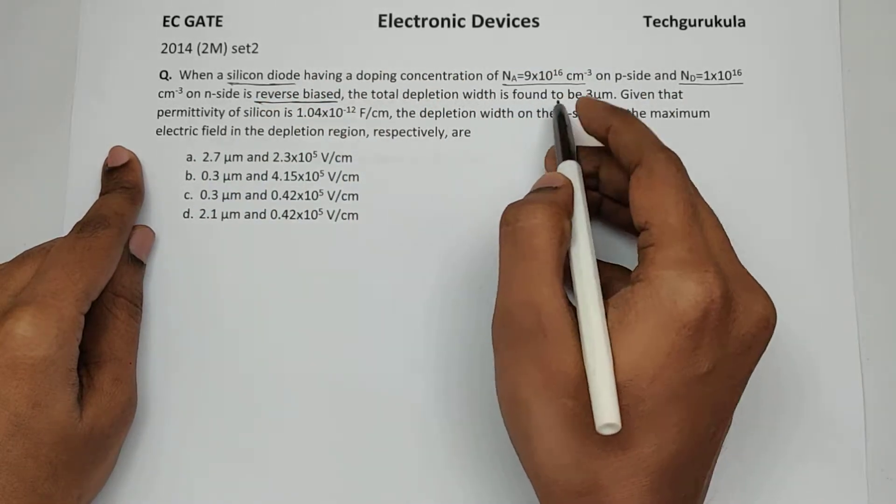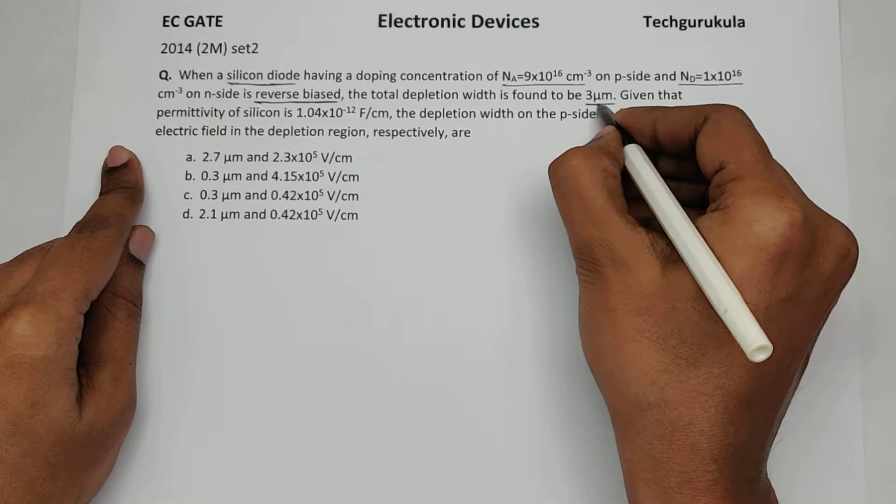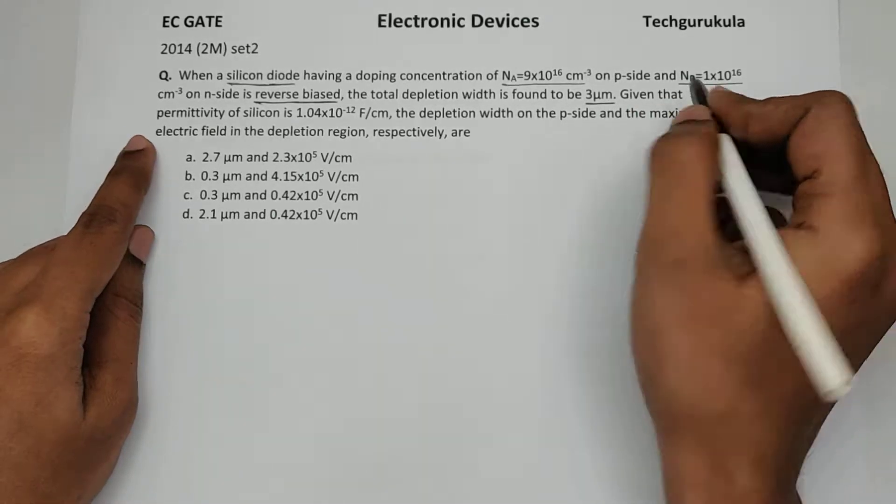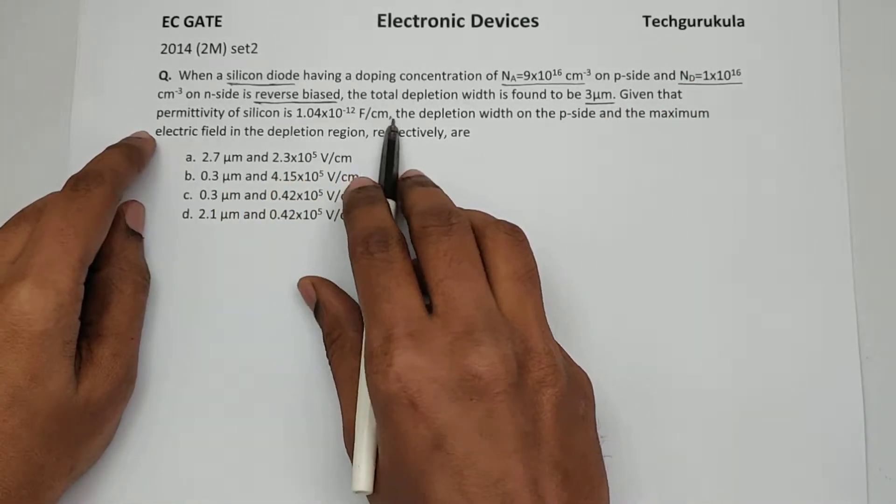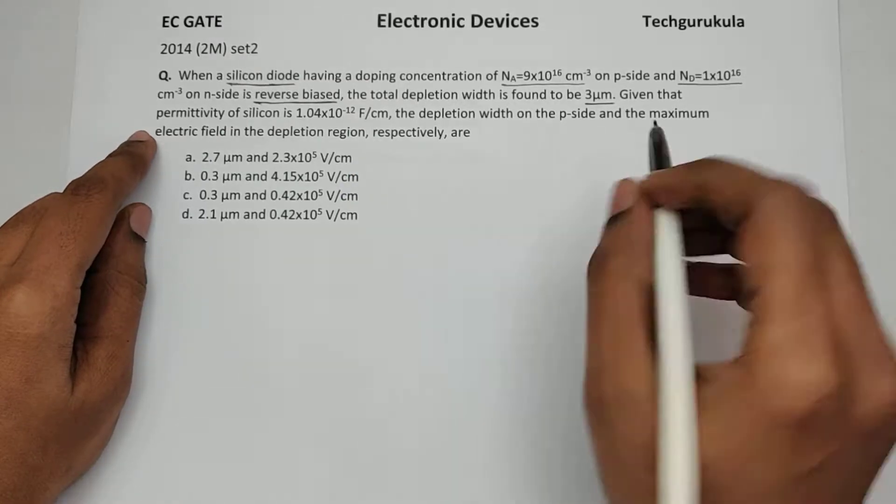The total depletion width is found to be 3 micrometers. Given that permittivity of silicon is this value, the depletion width on the P side,